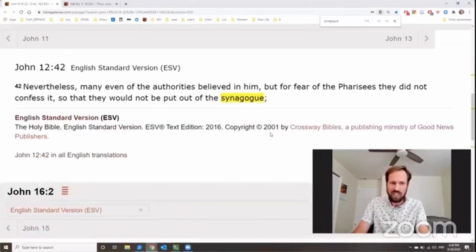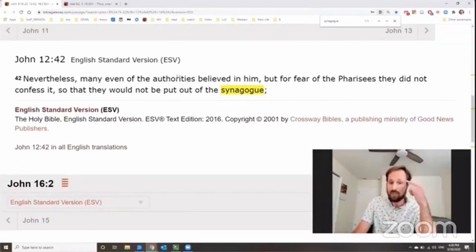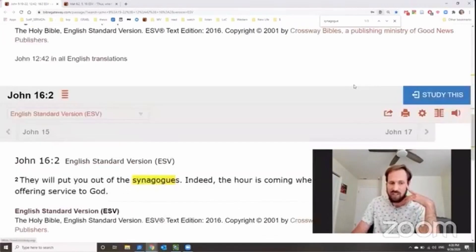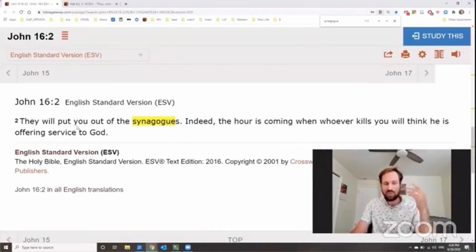We see this again in John 12. Nevertheless, many of the authorities believed in Jesus. It's great. But for fear of the Pharisees, they did not confess that belief because they didn't want to be put out of the synagogue. And finally, Jesus is going to warn his disciples as well. They're going to put you out of synagogues, he says.